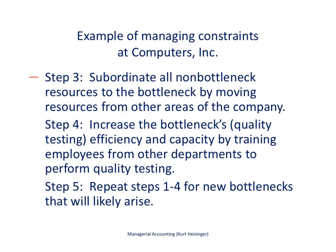Step three is to subordinate all non-bottleneck resources to the bottleneck. If we can find labor from other areas and train those personnel to perform quality testing, that will help alleviate the bottleneck. Step four is to increase the bottleneck's efficiency and capacity by bringing over other employees or training current staff. Step five is to start over — once one bottleneck is resolved, others may appear in shipping or assembly, so we go back to step one and repeat.